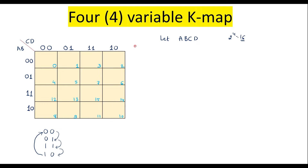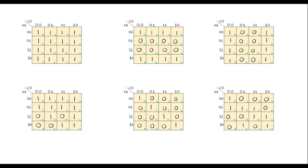When simplifying using a 4-variable Kmap, group 1s or 0s starting with the largest possible group: try 16-bit grouping first, then 8-bit, then 4-bit (quad), then 2-bit (pair), and finally independent grouping if none of the others are possible. Also note that cells like 2 and 10, or 0 and 8, are adjacent, and rows 8–11 are adjacent to rows 0–3.